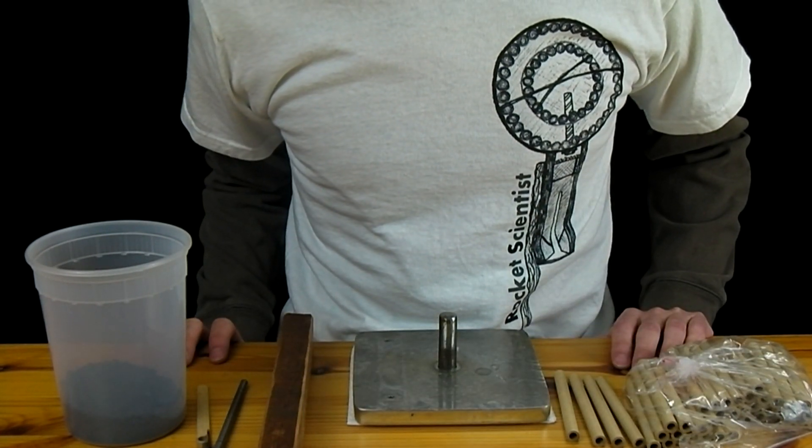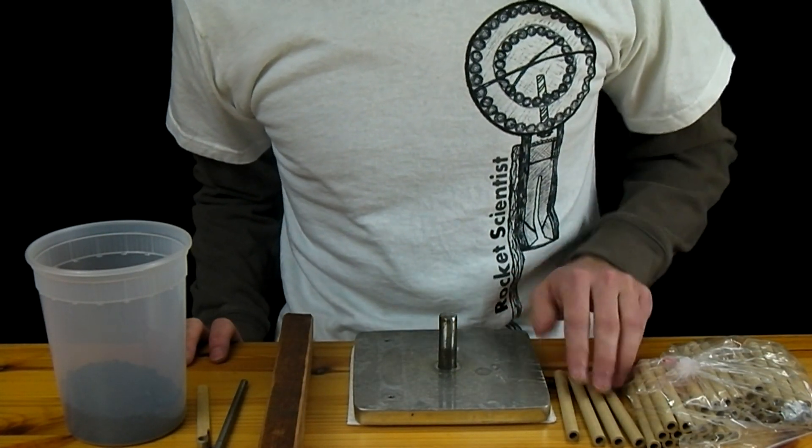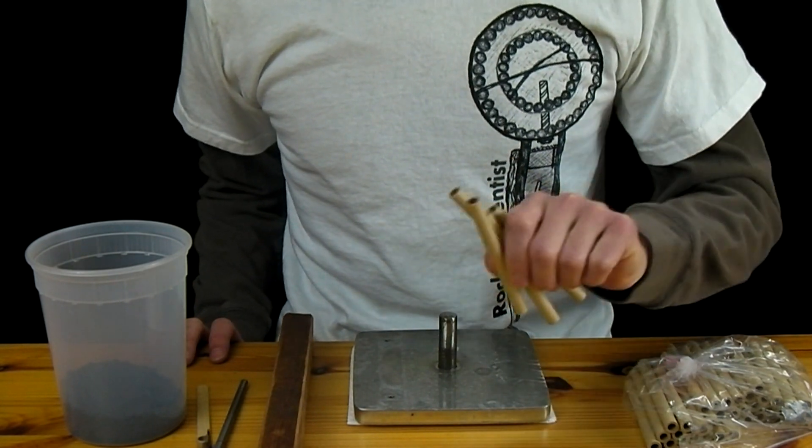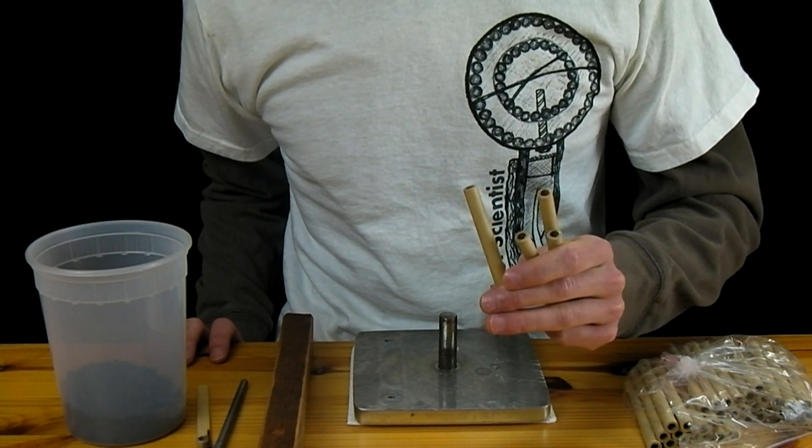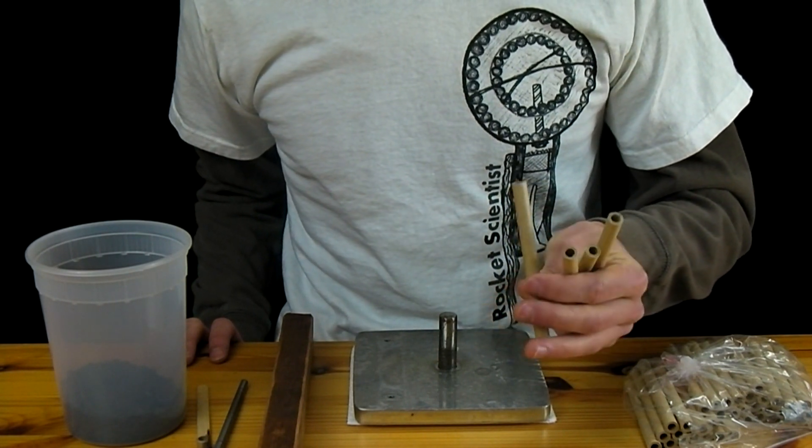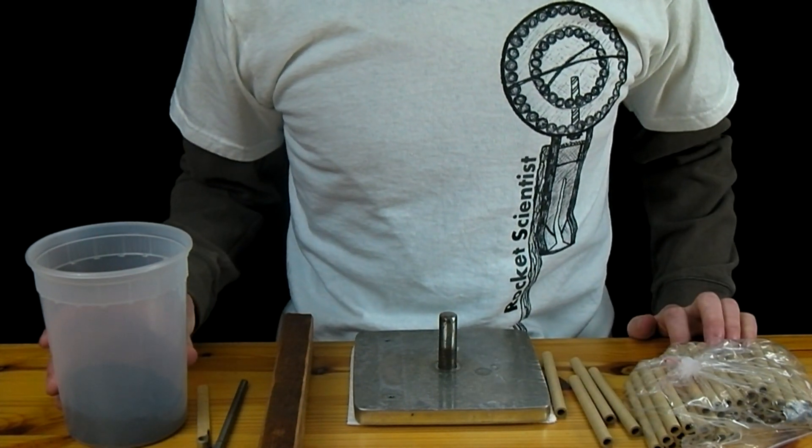Now there are two critical things that are needed to make spolets. You need good tubes and these I picked up from PyroDirect. These are 4 inch by quarter inch ID spiral wound tubes and you also need black powder.